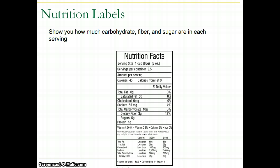When looking at a nutrition label, you should be able to tell how much carbohydrate, fiber, and sugar are in each serving. About halfway down, you'll see total carbohydrate, total dietary fiber, and total sugar, based on a 2,000 calorie diet. For example, there are 10 grams of total carbohydrate at 4 calories per gram, so 40 calories from carbohydrate. There are 5 grams of sugar times 4 calories per gram, giving 20 calories from sugar.